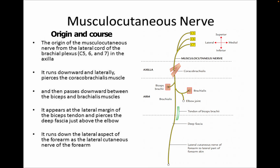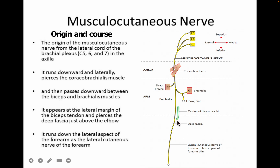Now let's discuss the musculocutaneous nerve. It arises from the lateral cord of the brachial plexus with root values C5, C6, and C7. This nerve runs downward and pierces the coracobrachialis muscle. In the arm region, it supplies the biceps brachii and brachialis muscles, and also the elbow joint. Near the cubital fossa, it pierces the deep fascia and continues as the lateral cutaneous nerve of the forearm, supplying the lateral part of the skin of the forearm.